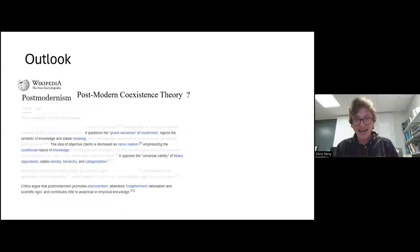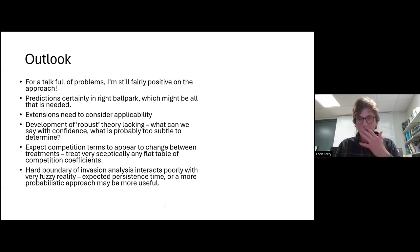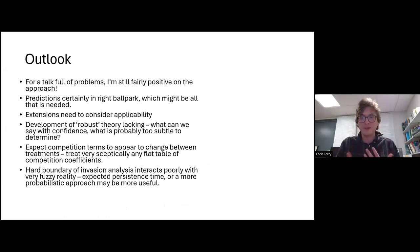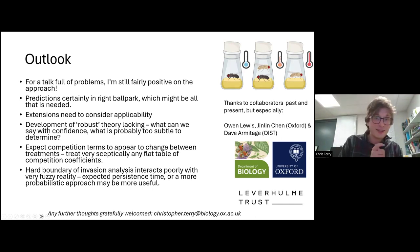Not getting too far away from the analytic precision that the firm framework can bring — from a talk full of problems, I'm actually quite positive about the role theory can have in making useful predictions. We can't keep tinkering with theory forever; we have to get out and try what we have. But we would benefit from some more emphasis on making theory — both old and new — robust to inevitable uncertainties. There's a big danger in just taking fitted values as truth. The hard boundary of invasion analyses interacts quite poorly with fuzzy reality, but it's going to have to. So with that, I'll say thanks to my funders and collaborators and open up the floor to questions.